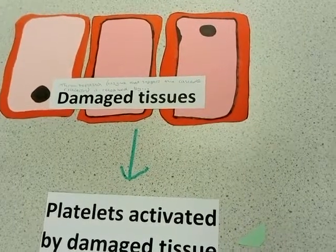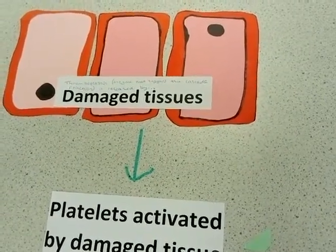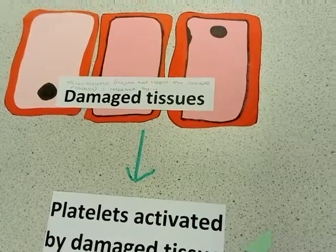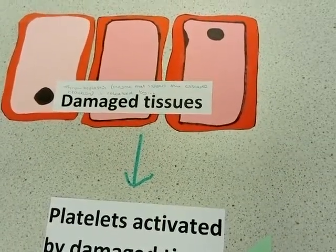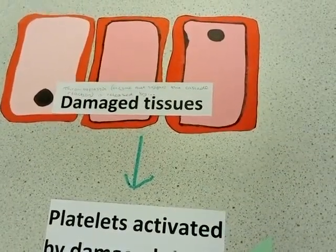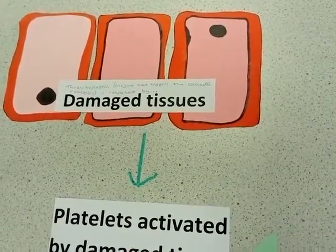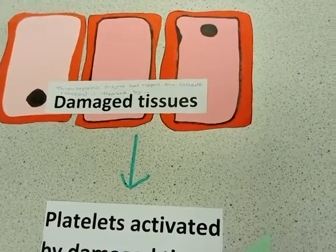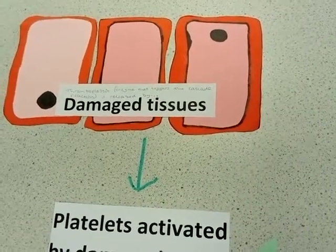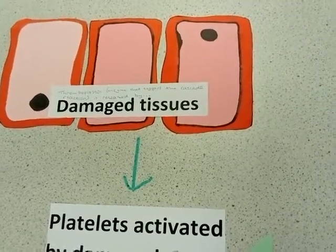One main defense against breakages in the skin and damage to the body is by blood clotting. This is an example of a non-specific defense.